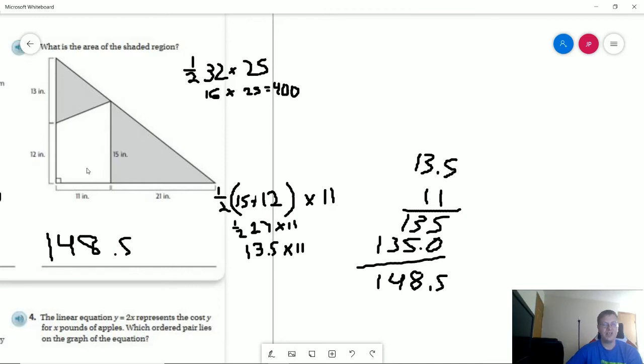Then we are going to find the area of the trapezoid that we are removing from the shaded area. And so our first two bases are going to be 15 plus 12. That's going to give us a total of 27. One half times 27 times 11. I decided to take this part and reduce it down to 13.5, which is half of 27. That way I can do this part a little bit more easily. And that gives us an area of 148.5 inches squared.